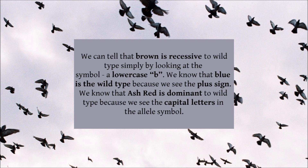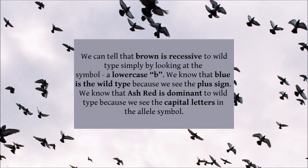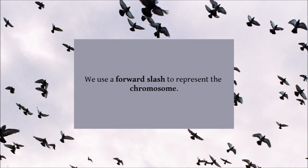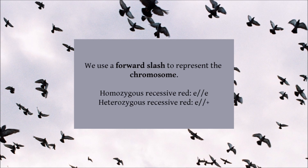We're almost done learning about genetic symbols. I'll quickly explain how we write down the genes carried by our pigeons. We use a forward slash to represent the chromosome. So let's imagine a homozygous recessive red pigeon — recessive red is represented by the symbol E, so homozygous recessive red would be written as E // E. If the pigeon was only heterozygous recessive red, we would write E // +. If a bird carries one copy of a mutant allele and one copy of the wild type, we always write the mutant first — so E // +, not + // E.